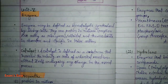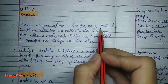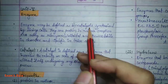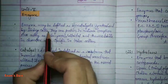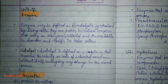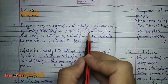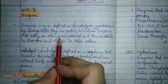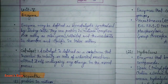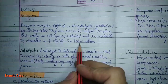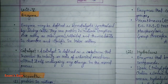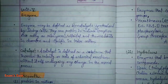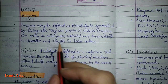Enzymes may be defined as bio-catalysts synthesized by living cells. They are biological catalysts that catalyze chemical reactions. Enzymes are protein in nature. Exception: RNA acting as ribozymes — RNA can act as ribozymes. All other enzymes are made from proteins. These enzymes are colloidal and thermolabile in character, meaning at high temperatures they will break down. They are also specific in their action — each enzyme has a specific action.